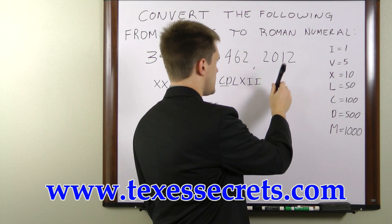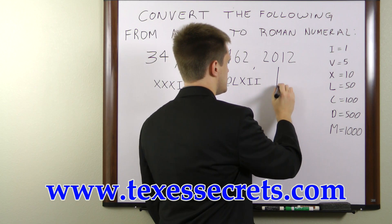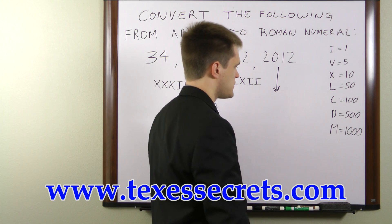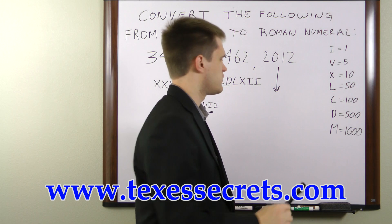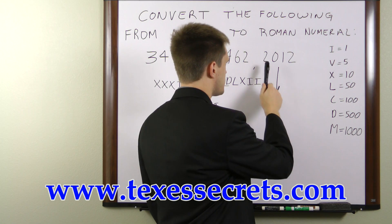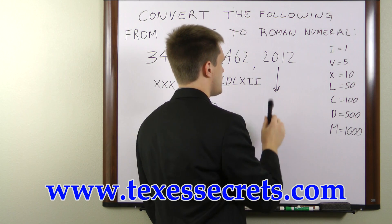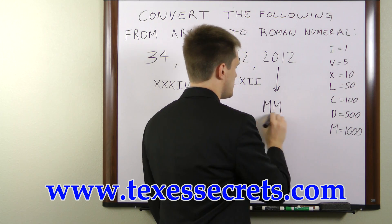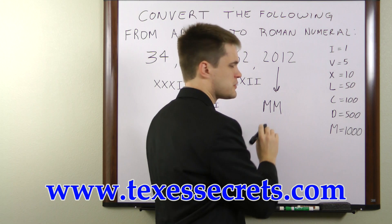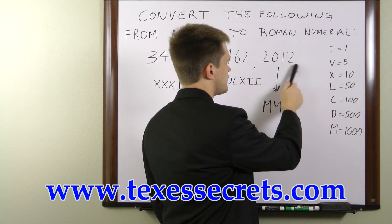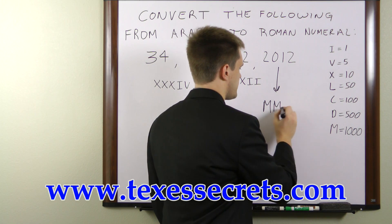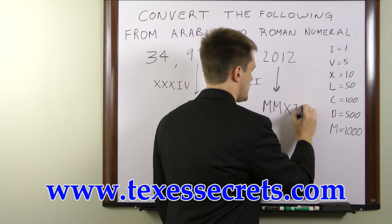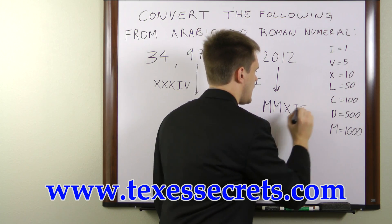And finally we have 2012. M is the highest unit we have, so we just write as many M's as we have thousands. We write MM, and that takes care of the 2,000. Then we have 12, so the full number is MMXII.